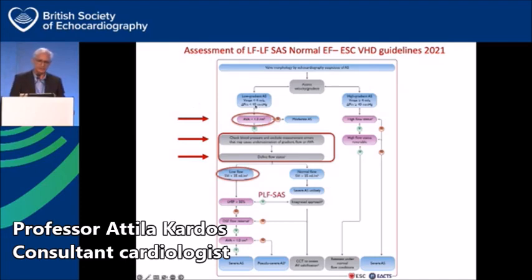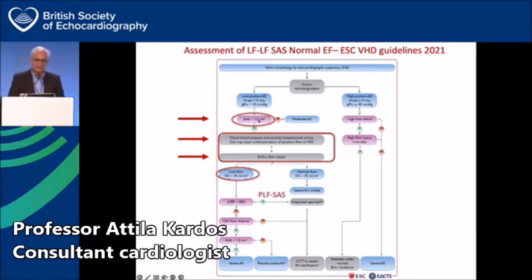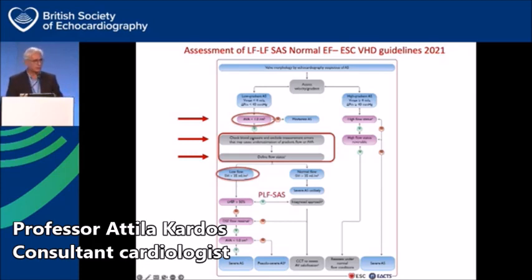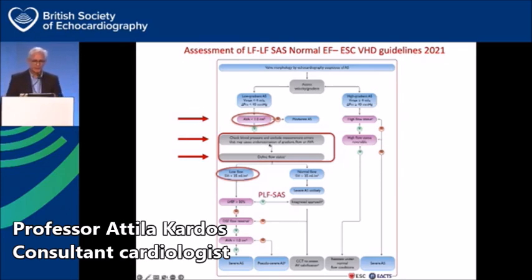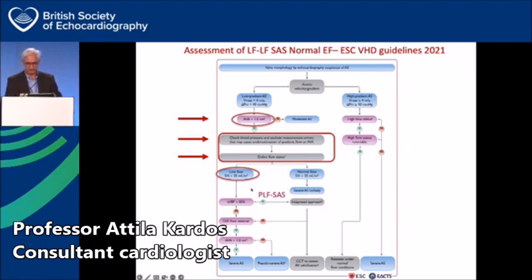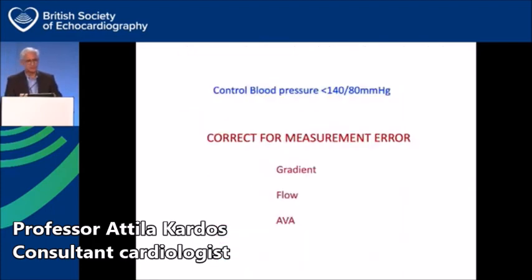What do the guidelines say? Once measurements fulfill the low flow, low gradient phenotype with aortic valve area less than 1 cm², the most important step — as guidelines emphasize — is to correct for blood pressure, with a target of 140/80 mmHg or below before performing echo measurements of flow, gradient, and velocity. More importantly, we need to exclude measurement errors that may underestimate gradient, flow, and valve area, and then properly define the flow status.